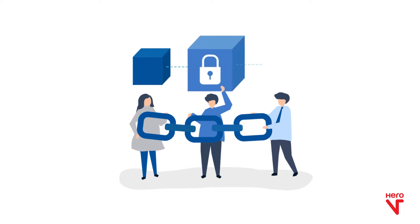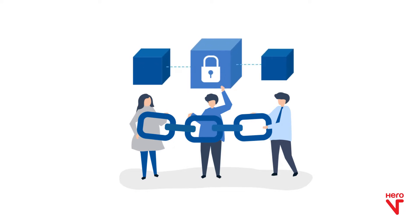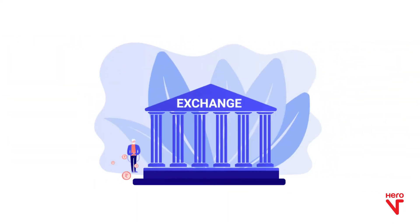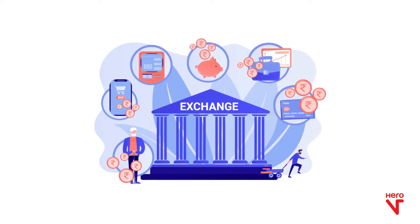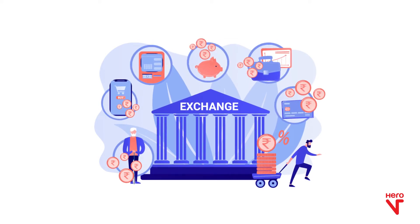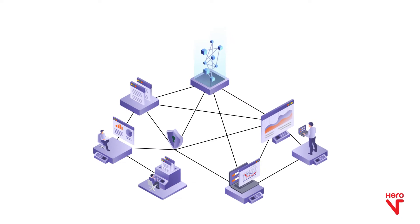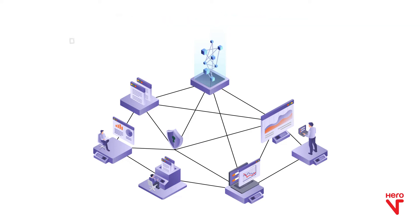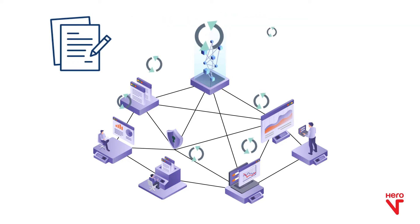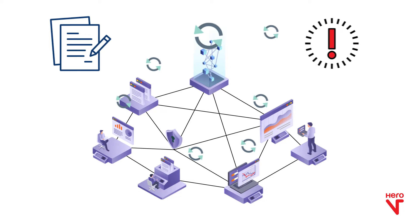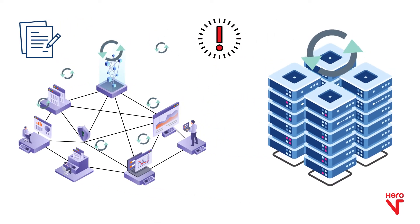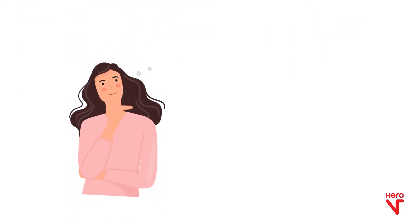Blockchain technology implementation allows a series of interconnected pieces of information to be held securely by a public or private community of users, doing away with the need for centralized entities like an exchange for tracking and recording transactions. Since the information storage is decentralized and multiple nodes hold the information, it enables tamper-proof record-keeping — any change will have to be updated on all the nodes, which is significantly more challenging than updating records stored in a single centralized location.